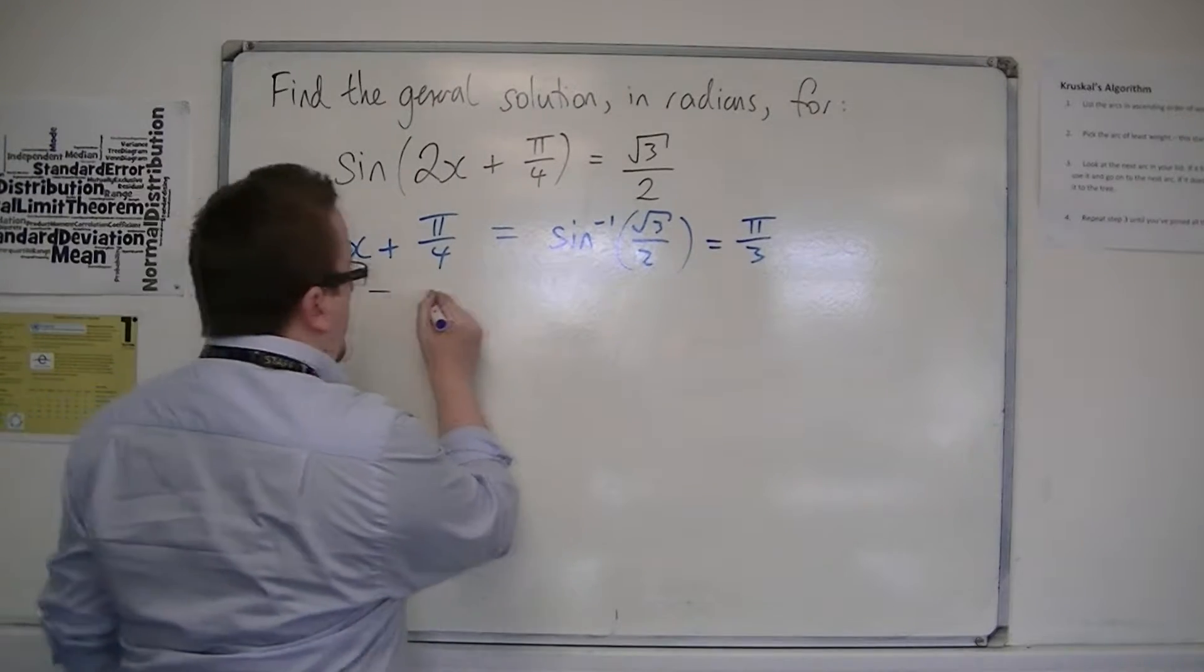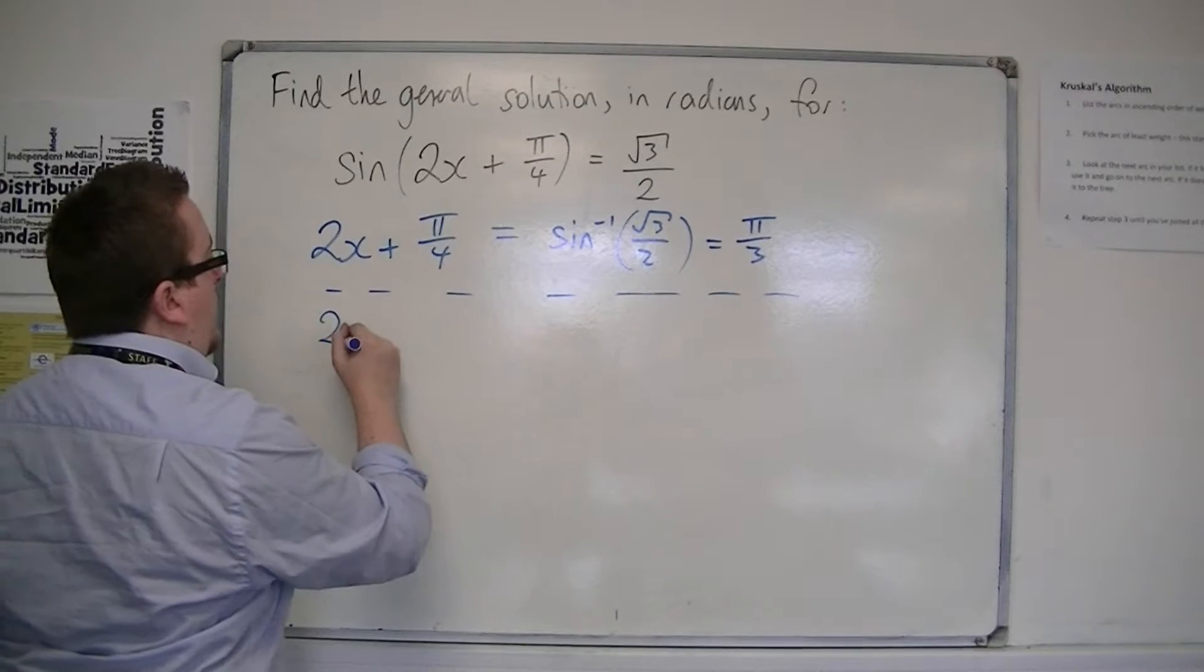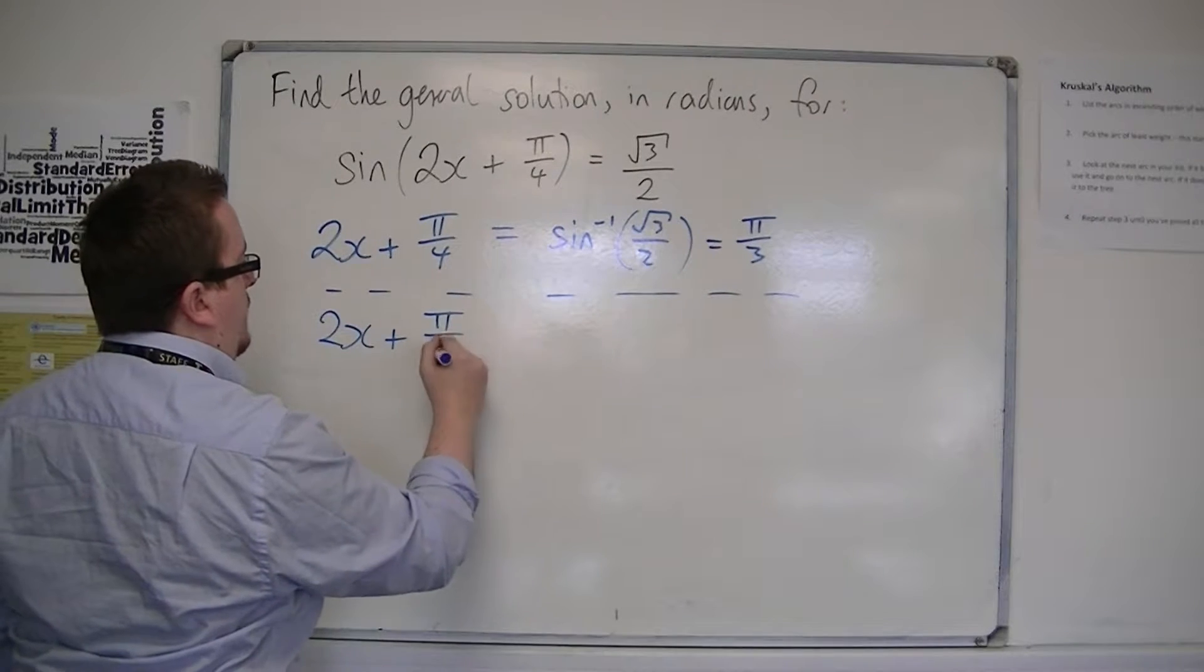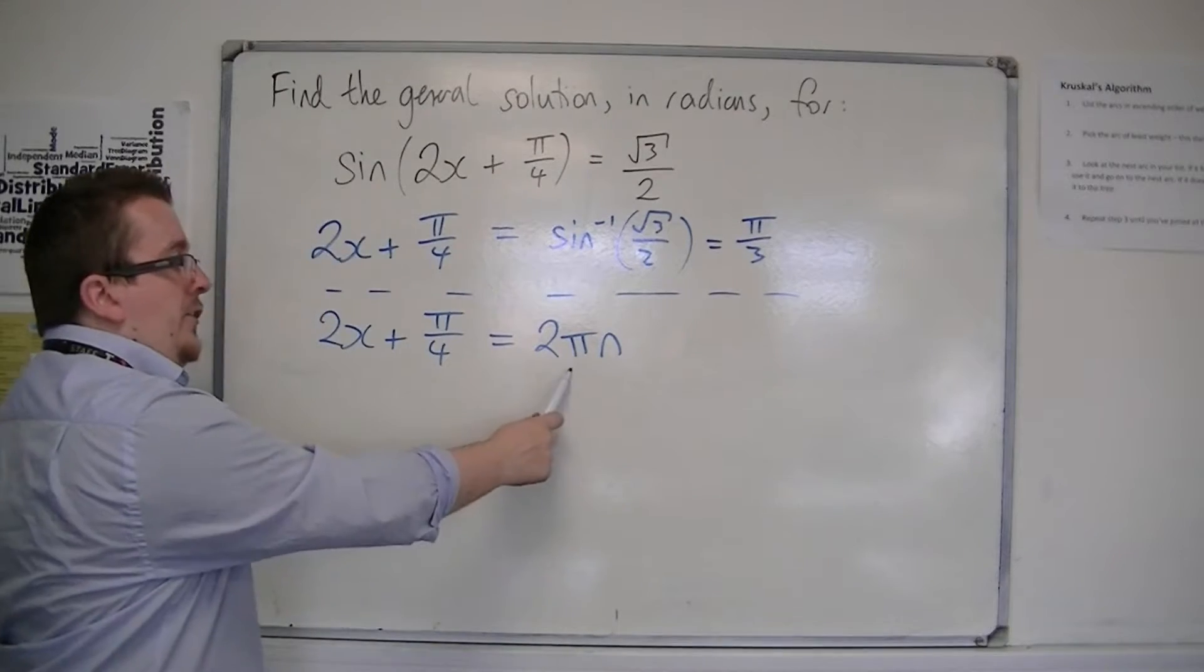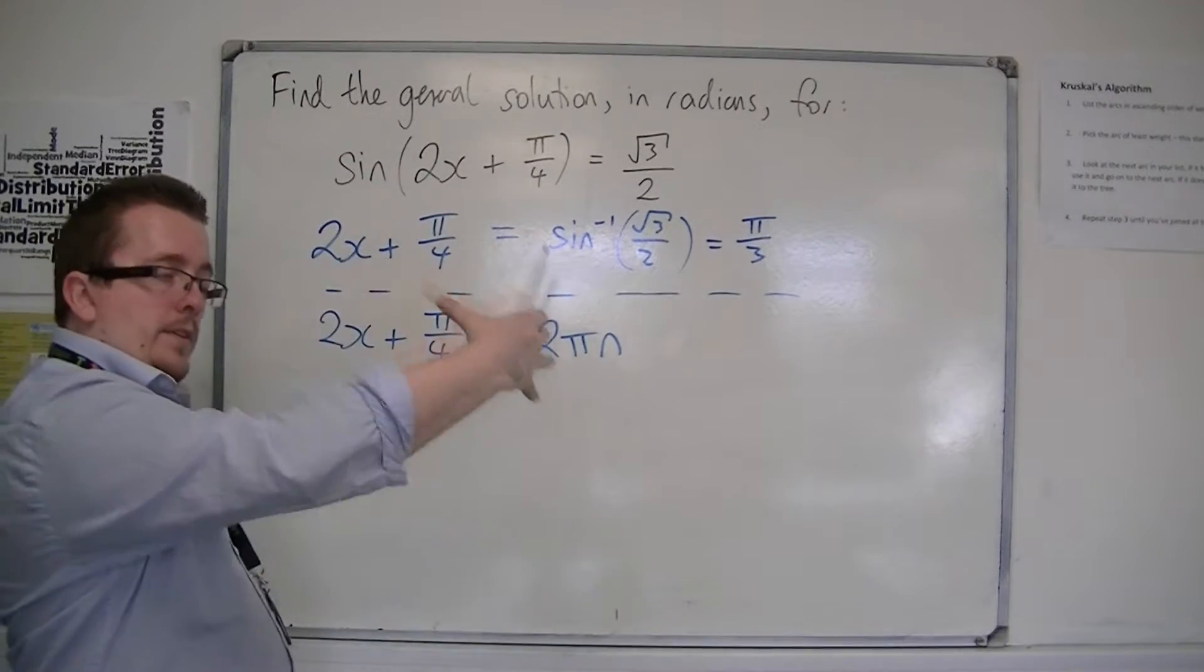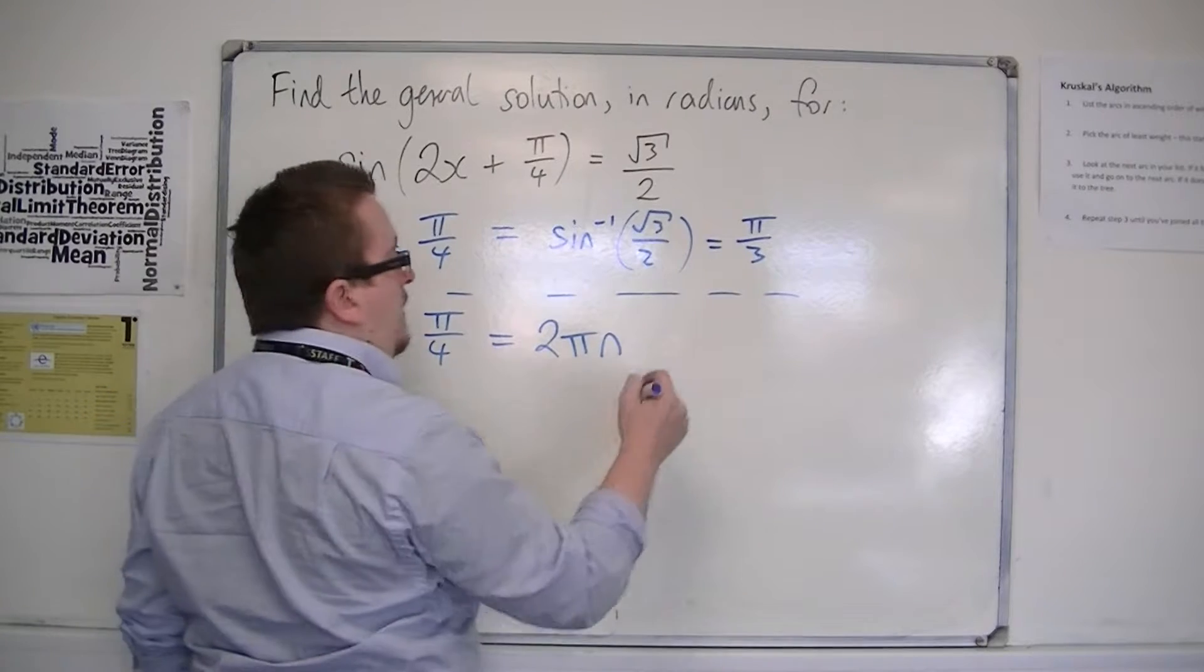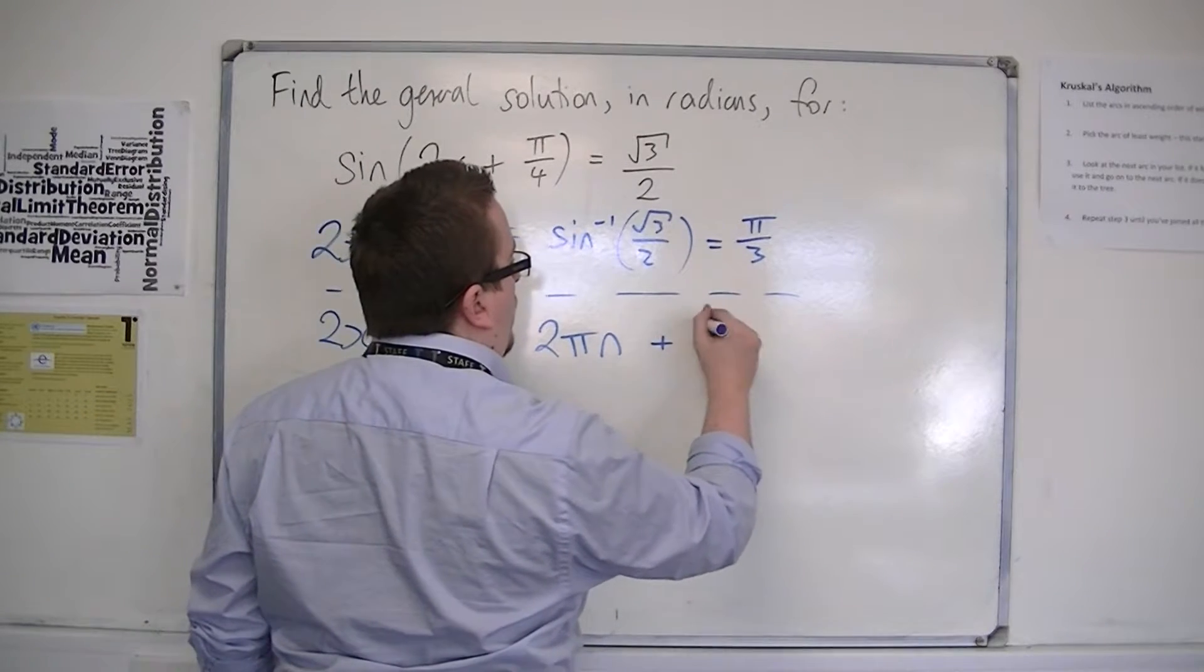When we're going into general form, we're introducing 2πn, because 2π is the period of sine. And I've got plus alpha.